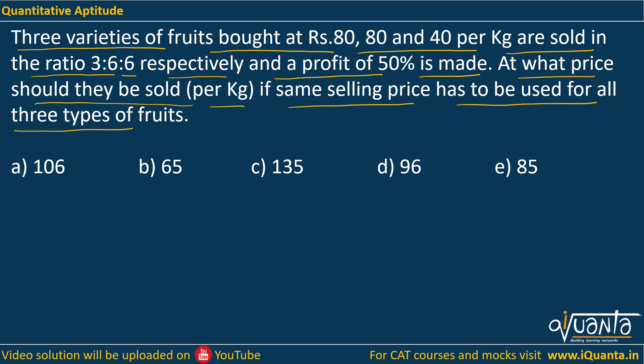We have been given the cost prices: 80, 80, and 40 — these are the cost prices of three different types of fruits. They are sold in the ratio 3:6:6, and a profit of 50% is made by selling them. First, let us find out the total cost price. The ratio is 3:6:6, so let me assume three kg of variety one was bought, six kg of variety two, and six kg of variety three.